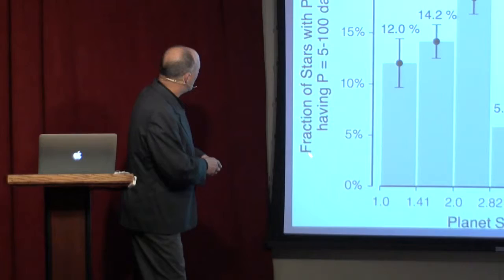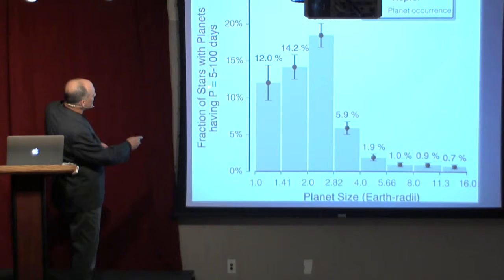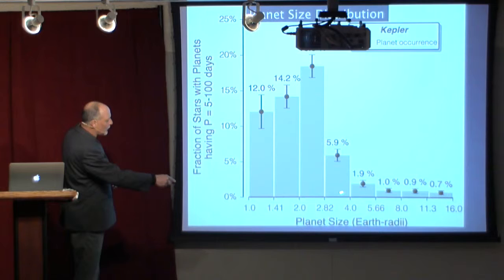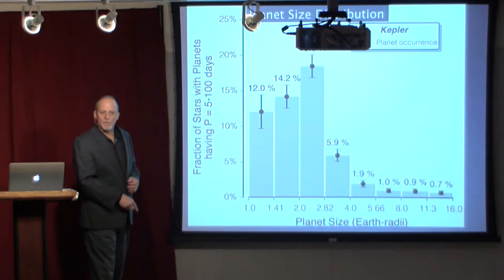What you're seeing is a graph showing the fraction of stars that have planets of different sizes. One is the size of the Earth, two is twice the size of the Earth, four is four times, eight times the size of the Earth, 16 times the size of the Earth.